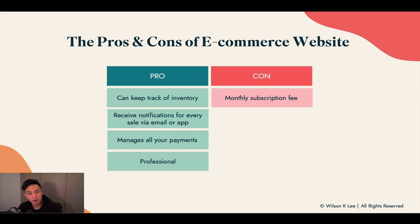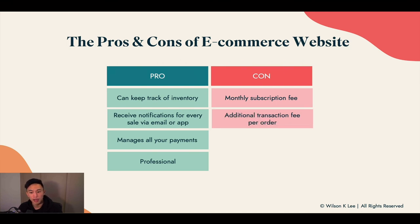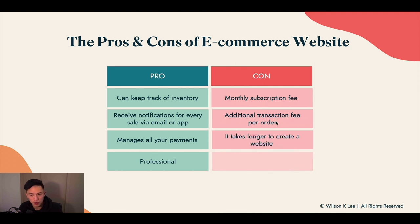On the con side compared to the free Instagram food business option: there is a monthly subscription fee to sign up with Shopify, ranging from $20 to $30 per month. There's also an additional transaction fee per order — anywhere from 50 cents to 3% for credit card payments. And it takes a little bit longer initially to set up a website.